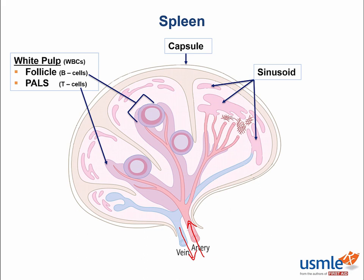If B cells are predominantly found in the follicles, it would stand to reason that these numerous follicles are responsible for producing IgM antibodies in our bodies. Peri-arterial lymphatic sheaths, or PALS, contain T cells that surround arteries within the white pulp.